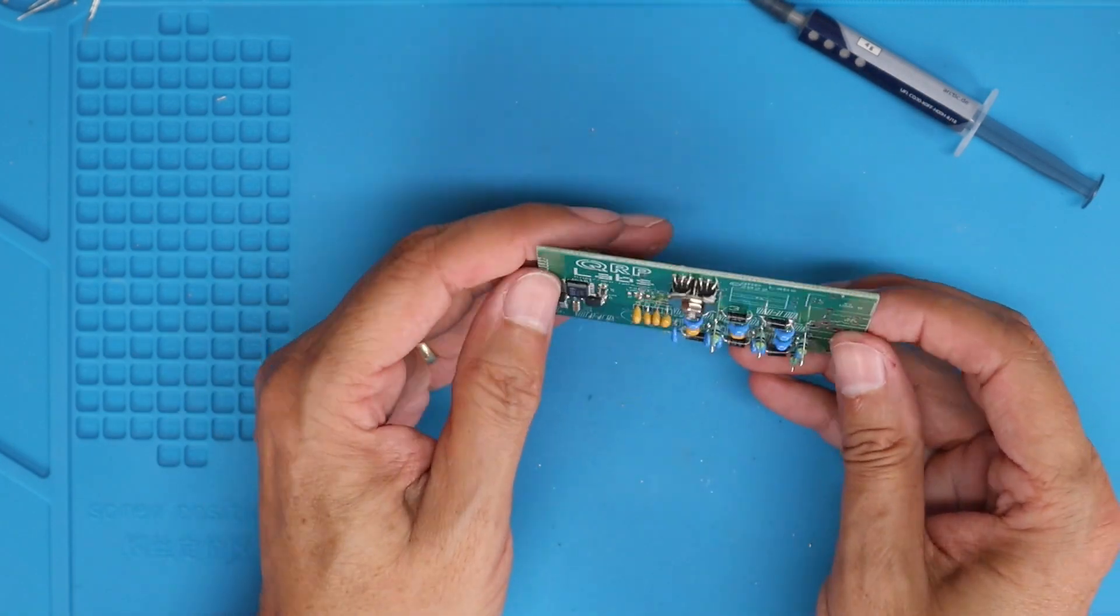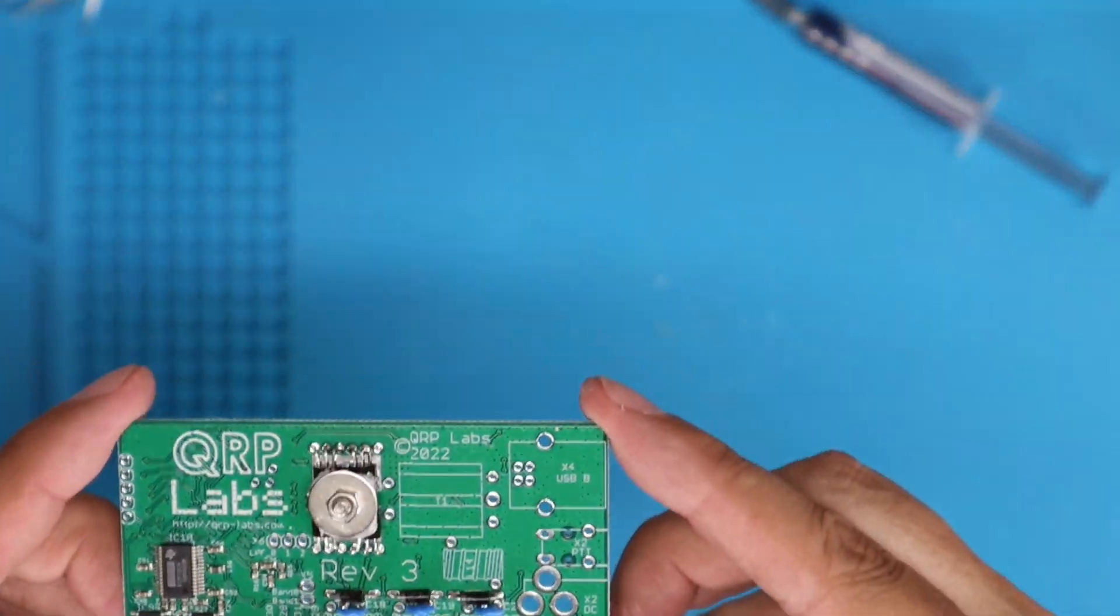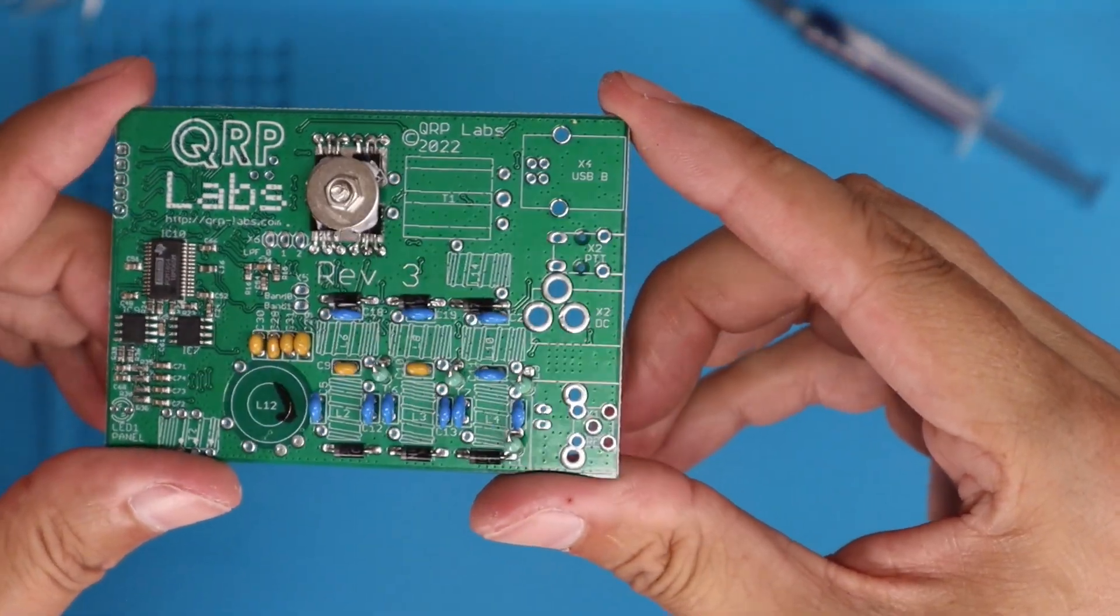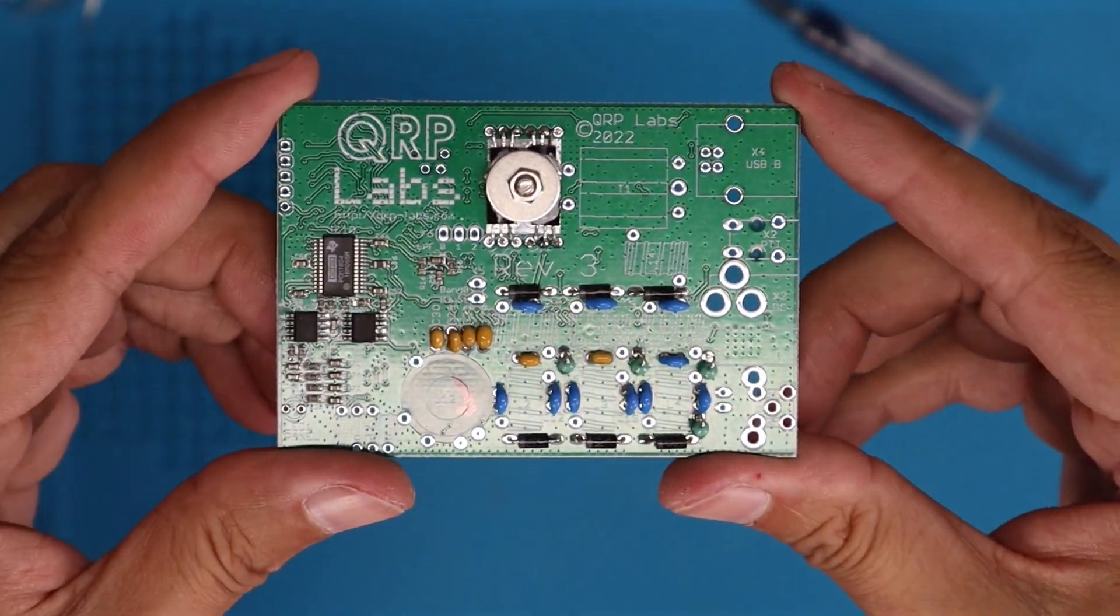I put a link in the description of how you can get this thermal paste from Amazon. There's multiple different kinds you can use. Some work better than others. This is just one that I found that was fairly reasonably priced, but was rated really well.